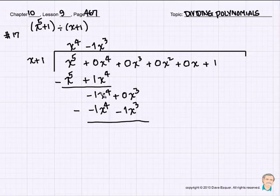We subtract. A negative x to the 4th take away a negative x to the 4th is 0. 0x cubed take away a negative 1x cubed is a positive 1x cubed. We bring down our 0x squared.